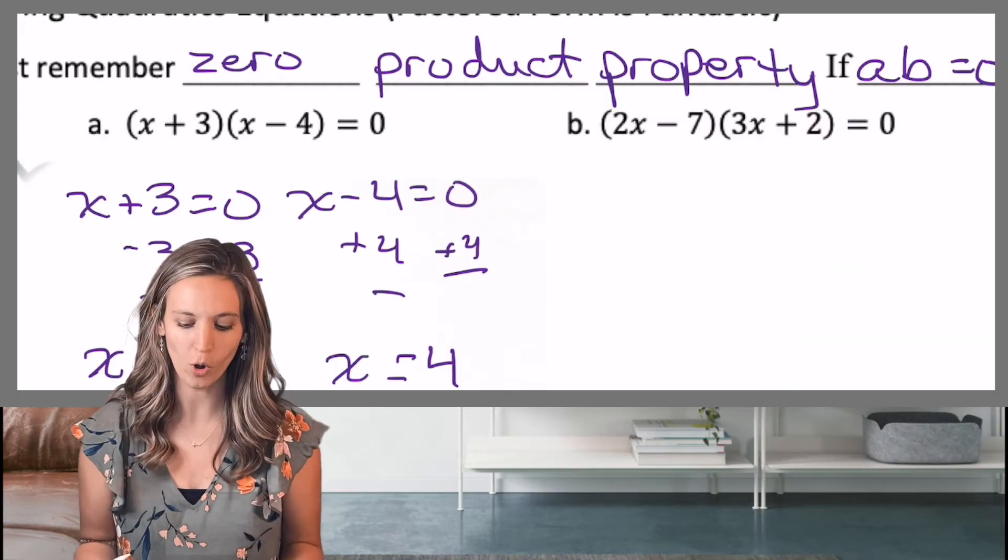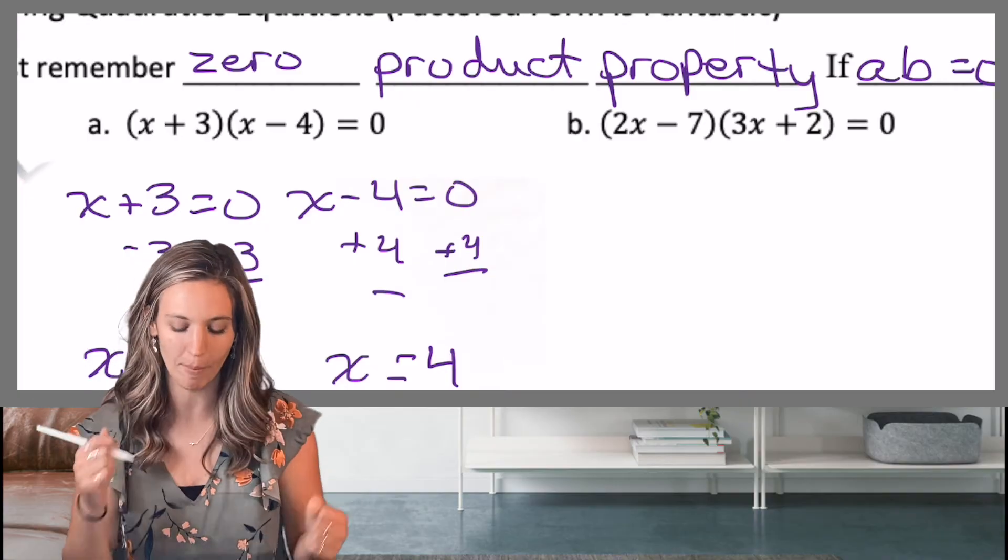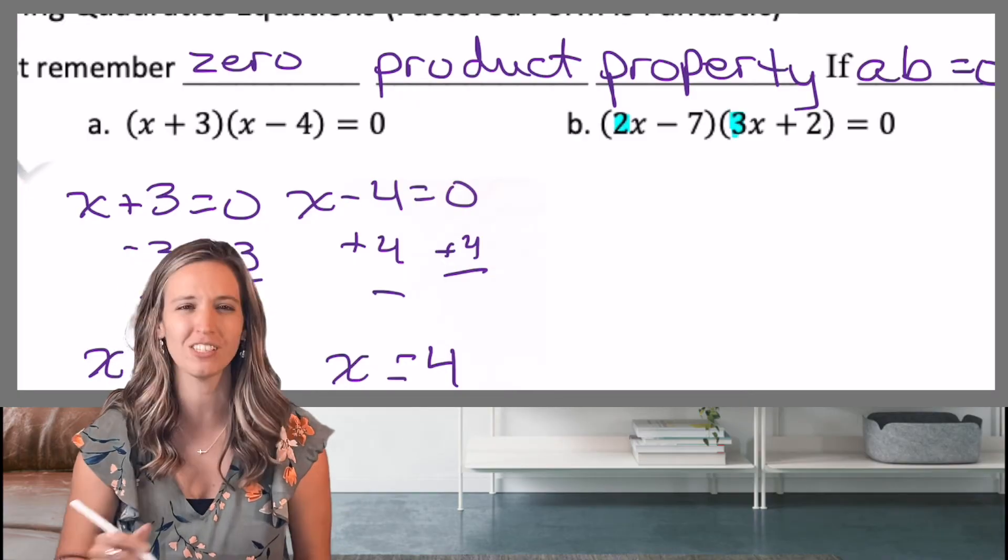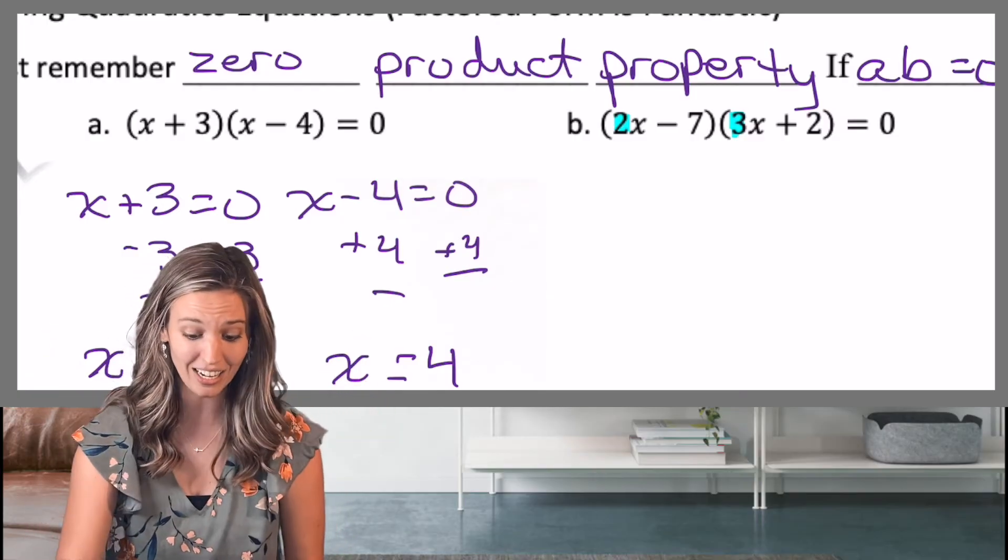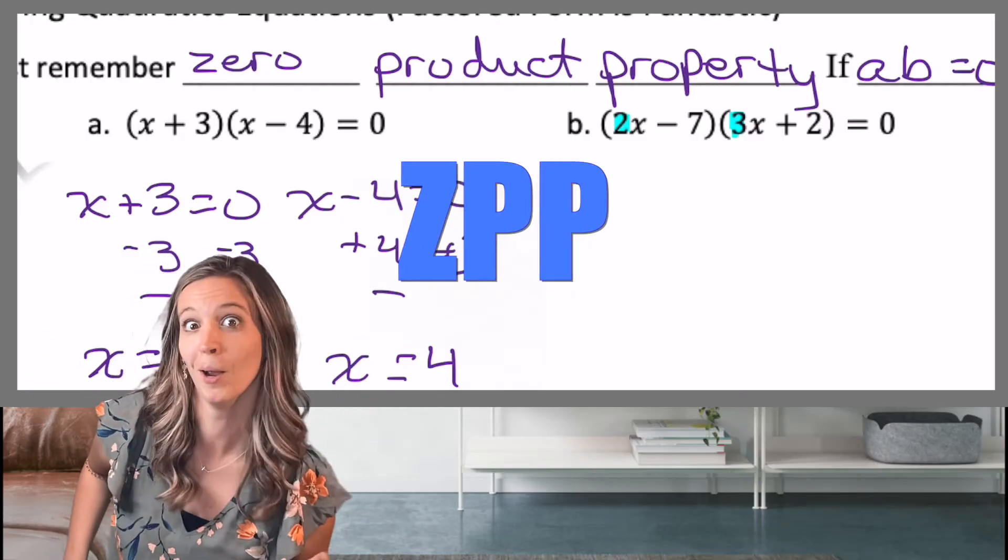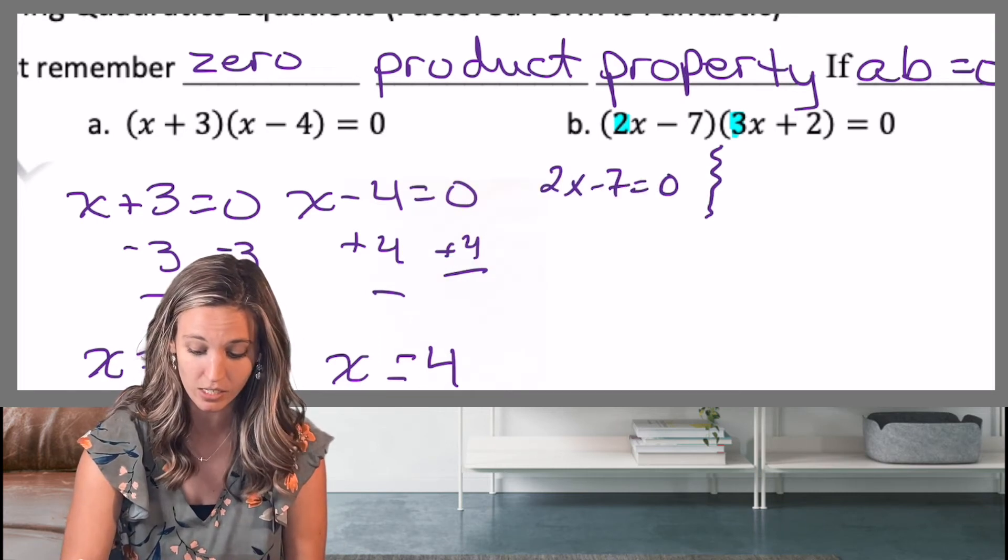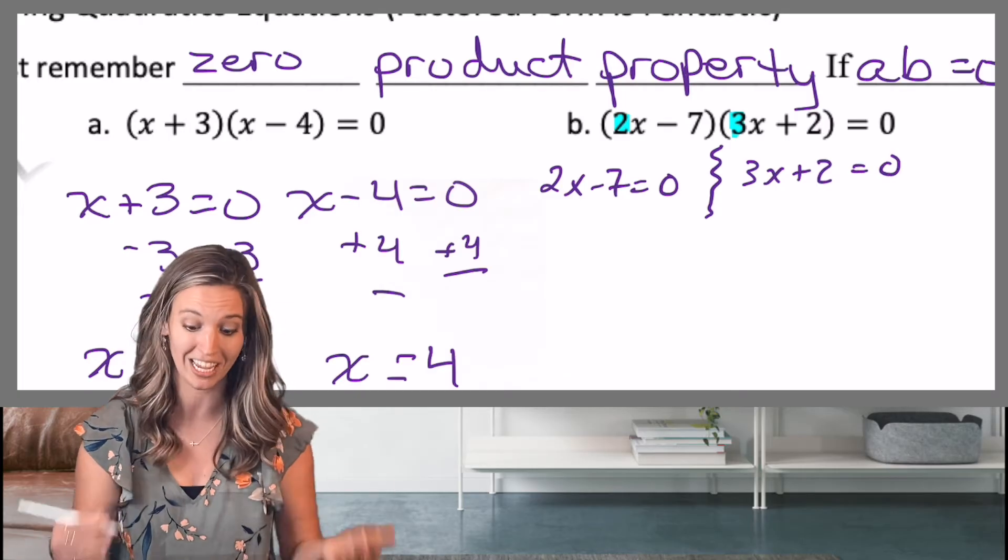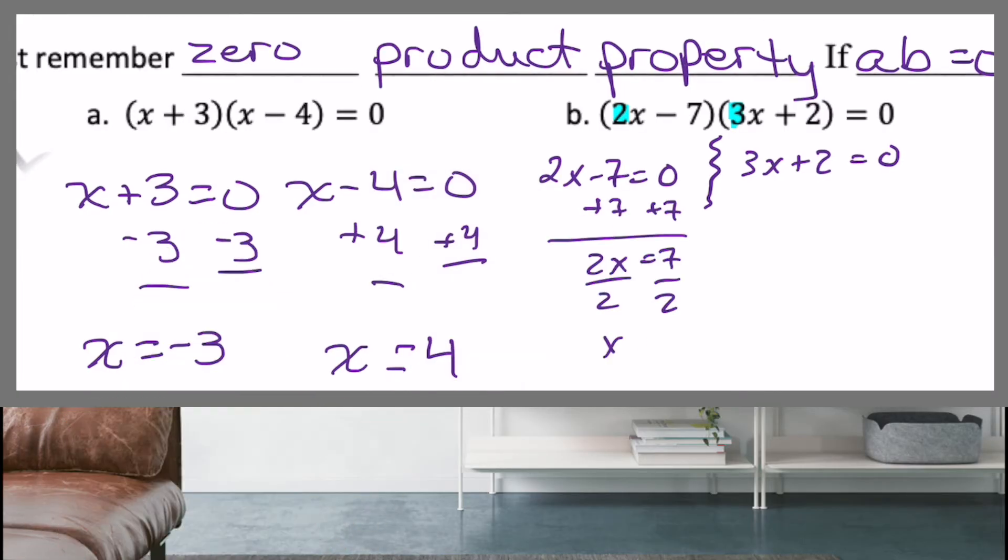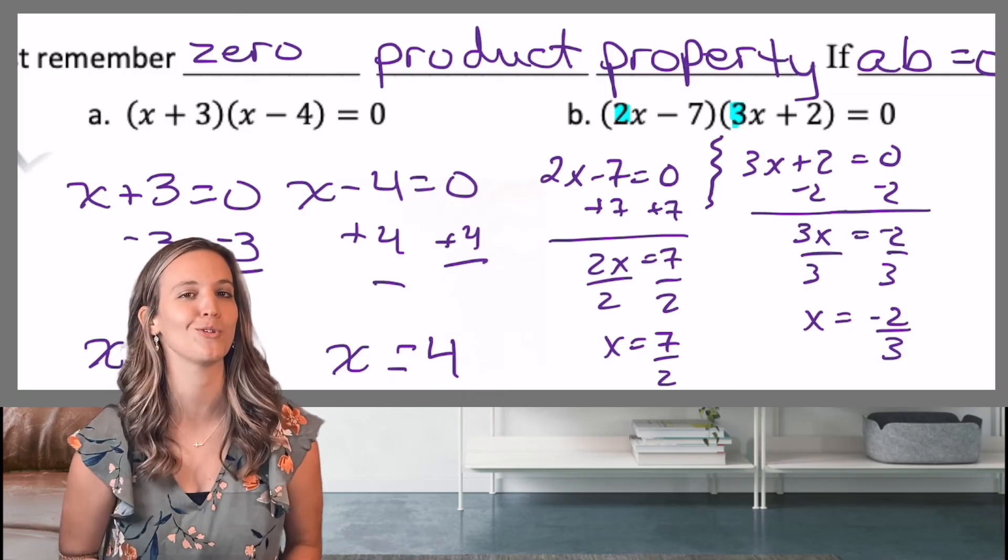For B, we have our factored form. Now, it would be so great if I could do inside opposite, right? And just quickly get my solutions, but look, I have coefficients in front of both of my X's, so I can't just quickly do inside opposite. I need to go ahead and use ZPP. Yeah, you know me. Yes, so I'm gonna set two X minus seven equal to zero. Three X plus two equals zero, zero product property. And now I can solve each of those. So it looks like my two solutions here, X equals seven halves and X equals negative two thirds.